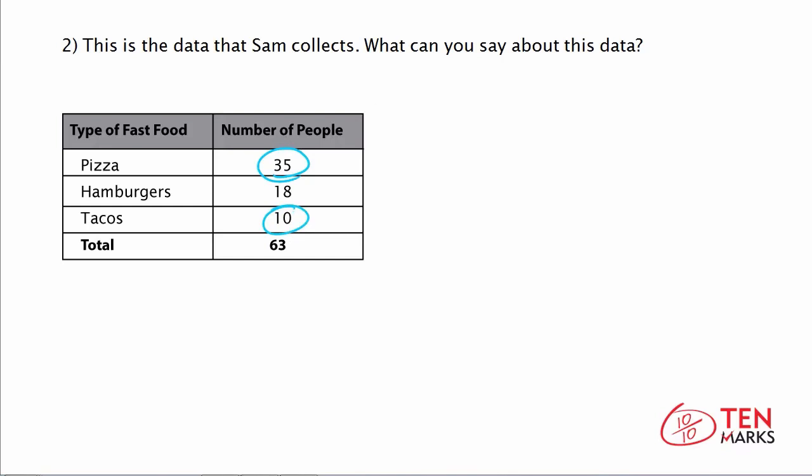The number of people who like hamburgers is about half the number of people who like pizza — if you had 18, 18 times 2 would be 36, which is roughly half of the number who like pizza. And this is almost twice as many people as the number who like tacos, because 10 times 2 would be 20, and 18 is right around 20. So you can infer that for the entire neighborhood, the number of people who like hamburgers is between those who like tacos and pizza. In this lesson, you've learned about different ways of collecting sample data and how to make inferences based on the data collected. Happy solving!